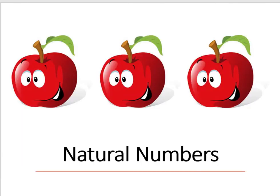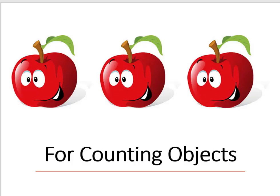The first kind of numbers that you learn about, probably in kindergarten or first grade, are called the natural numbers. Natural numbers are used for counting things. We have three apples here, and three is a natural number.